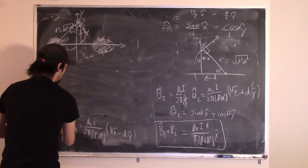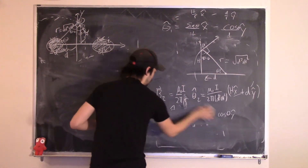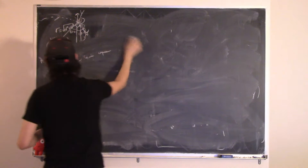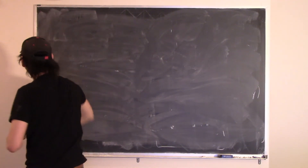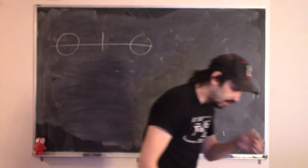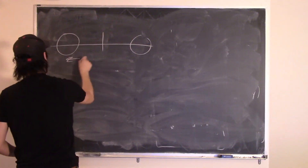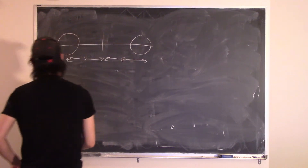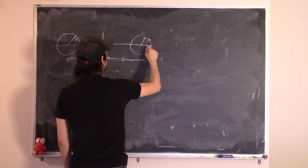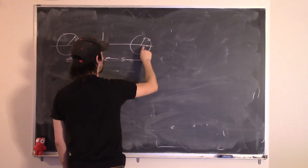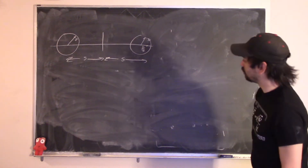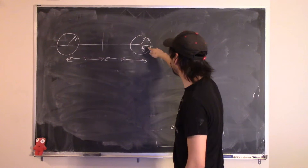The second part of this question asks for the magnetic field at a point on the x-axis that's inside one of these thick wires. The wires are centered a distance s from the origin, each with radius D. We want the magnetic field at a point that's a distance D/2 from the center of one of the wires. We calculate the field from each wire and add them together.